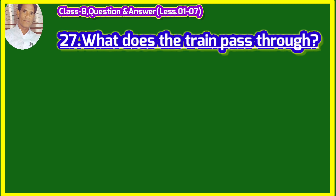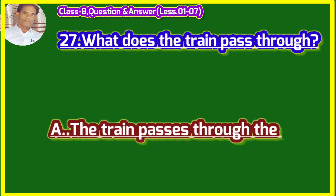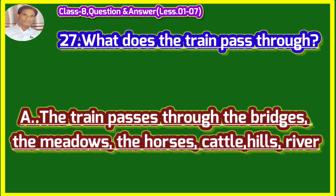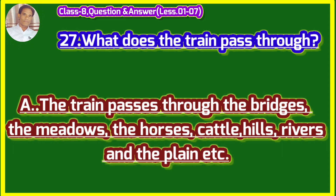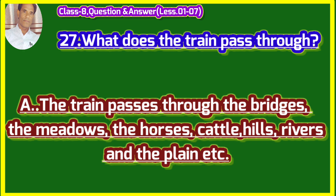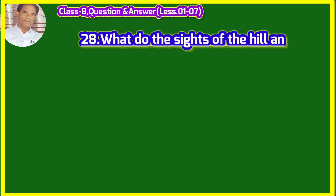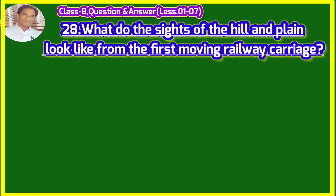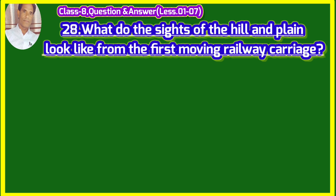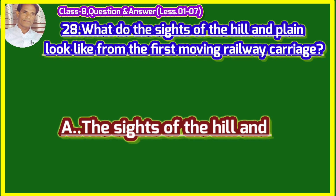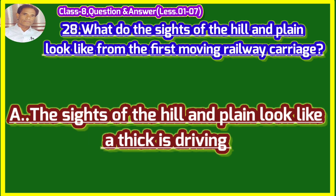What does the train pass through? (Rail gari kaha kaha se gujarati hai?) The train passes through bridges, meadows, horses, cattle, hills, rivers and the plain, etc. Rail gari pulon se hokar, charagah se, ghodon se, pashuon se, pahadiyon se, nadiyon se tatha maidan aadi se hokar gujarati hai. What do the sights of the hill and the plain look like from the fast moving railway carriage? (Tej gati se chalti rail gari ki bogie se pahadiyon ka drishya tatha maidan kaisa dikhta hai?) The sights of the hill and the plain look as thick as driving rain.